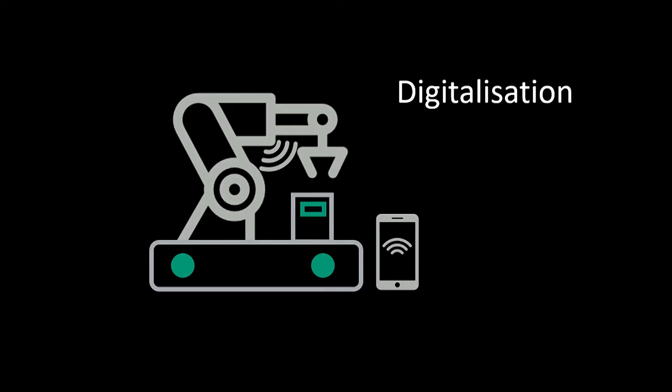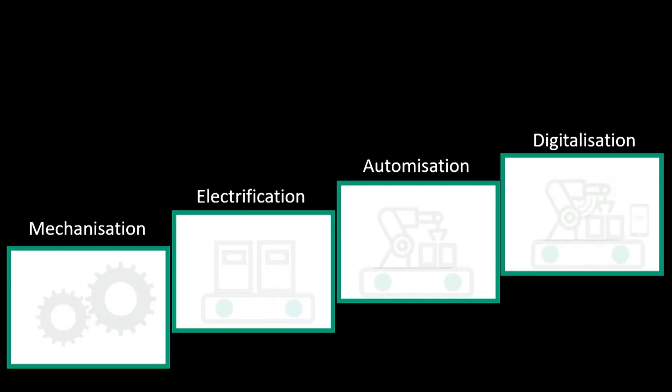Today we are in the age of the digital revolution, where even things began to communicate, to learn, to decide, and even get autonomous. So these are the four steps of the industrial revolution.